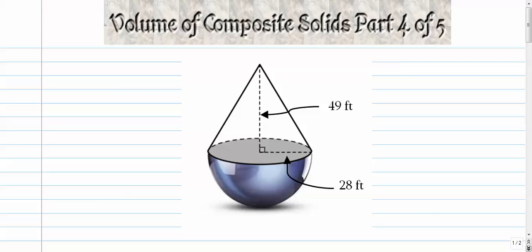All right, part four of composite solid volume. If you watched the previous three videos, this one's going to be very similar. I'll do two examples. We're kind of ramping up the intensity of the complexity of these examples here as we go along. But basically what we're doing here is we're trying to find the total volume that is inside this cone on top of a hemisphere.